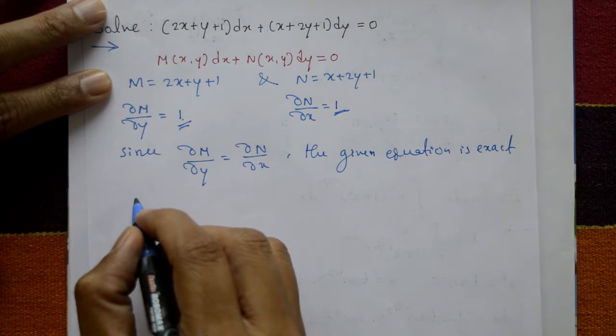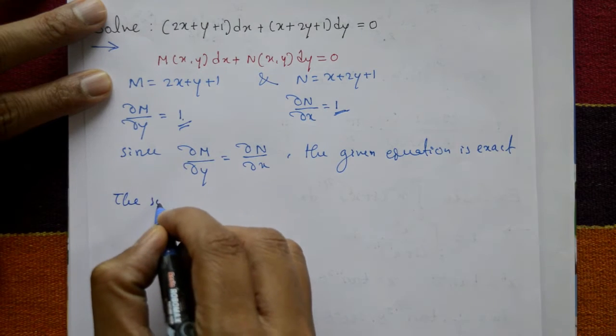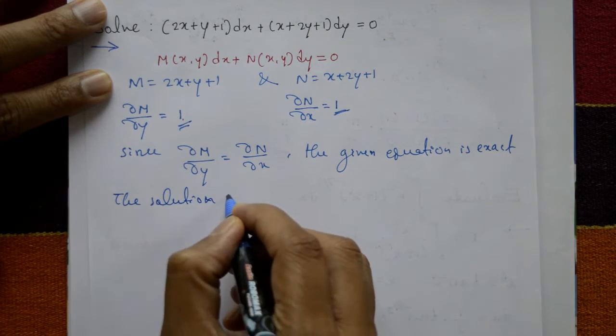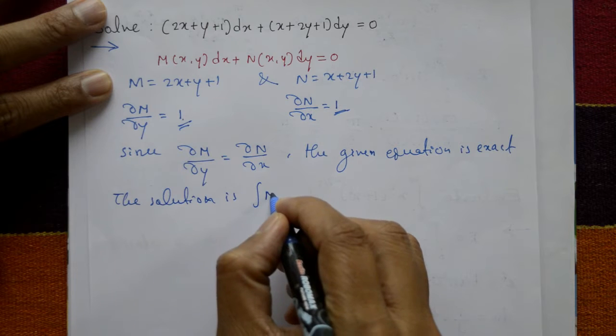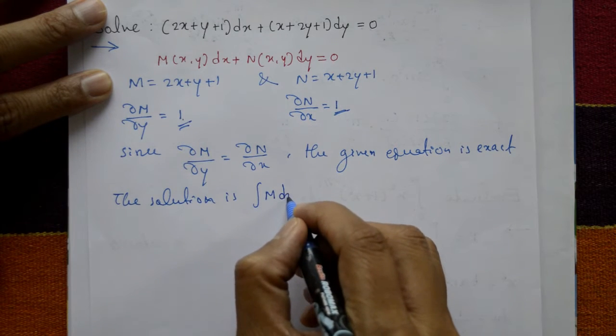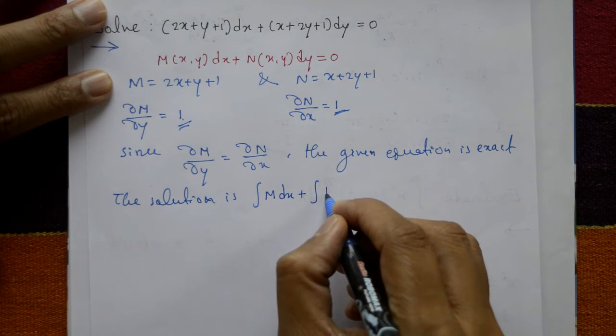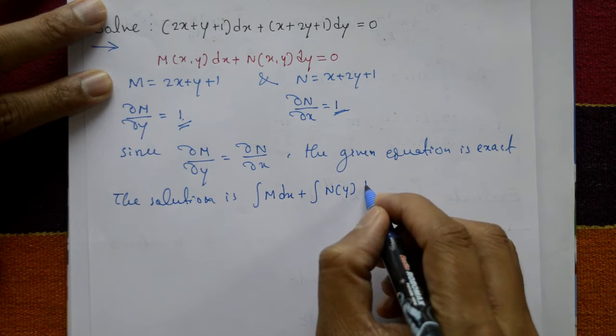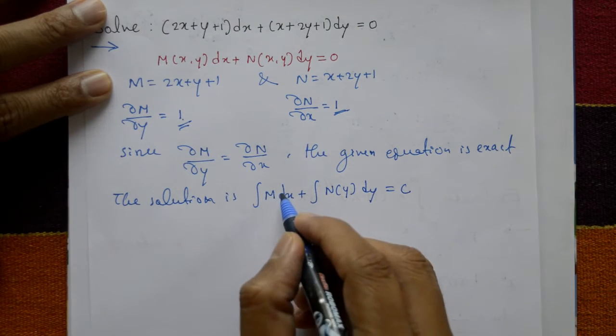Now the solution is: integration of M with respect to x plus integration of N(y) with respect to y equals C.